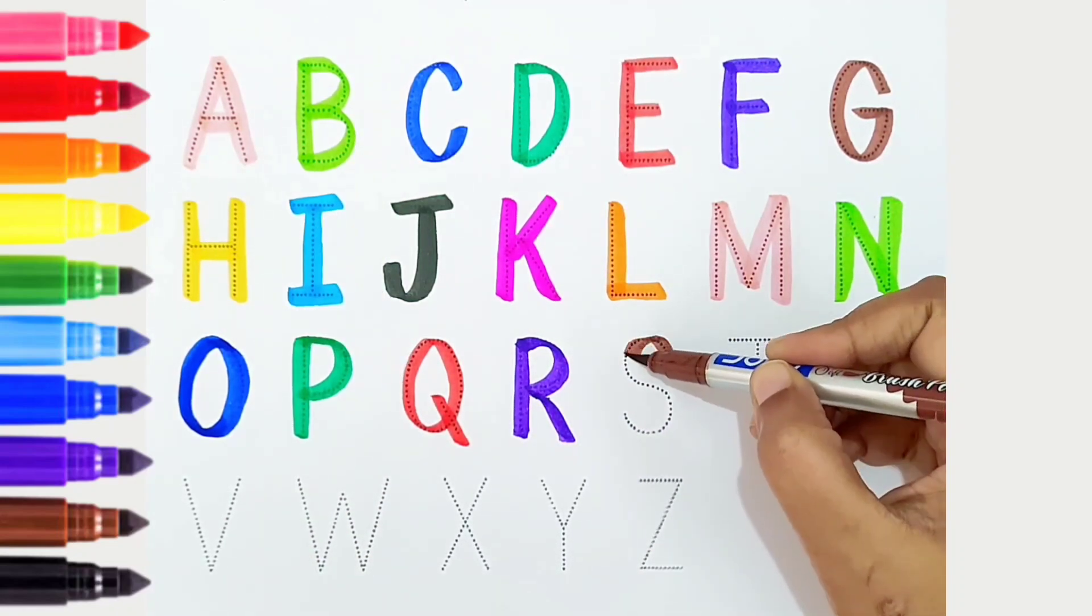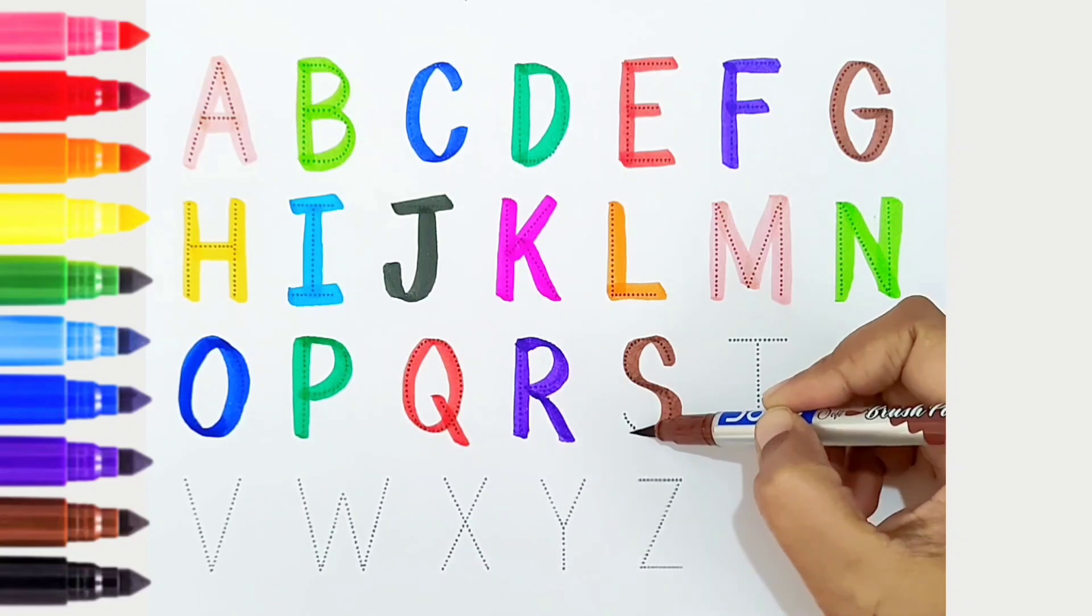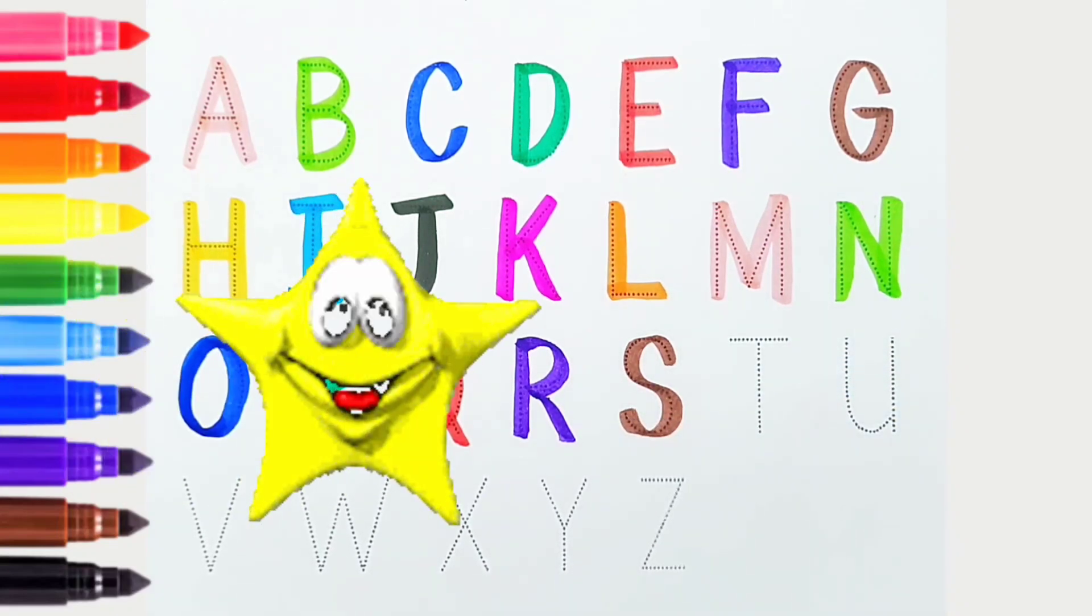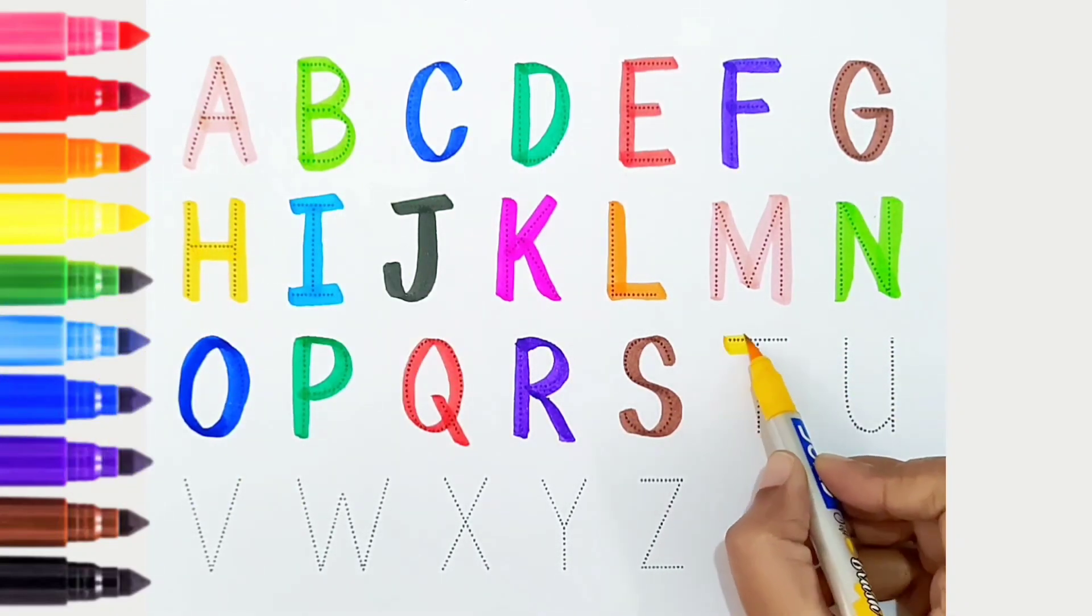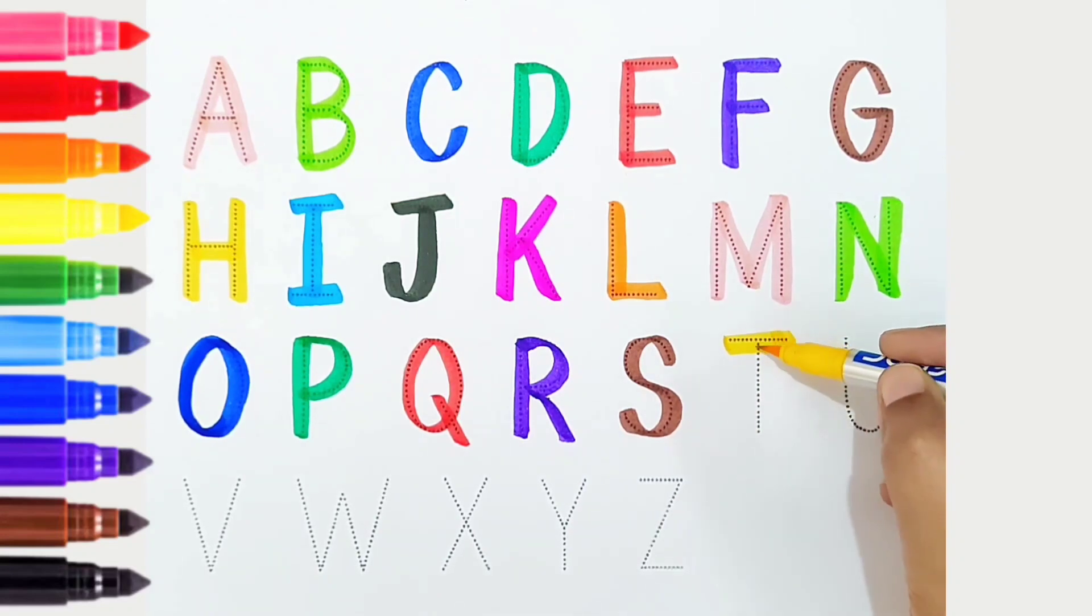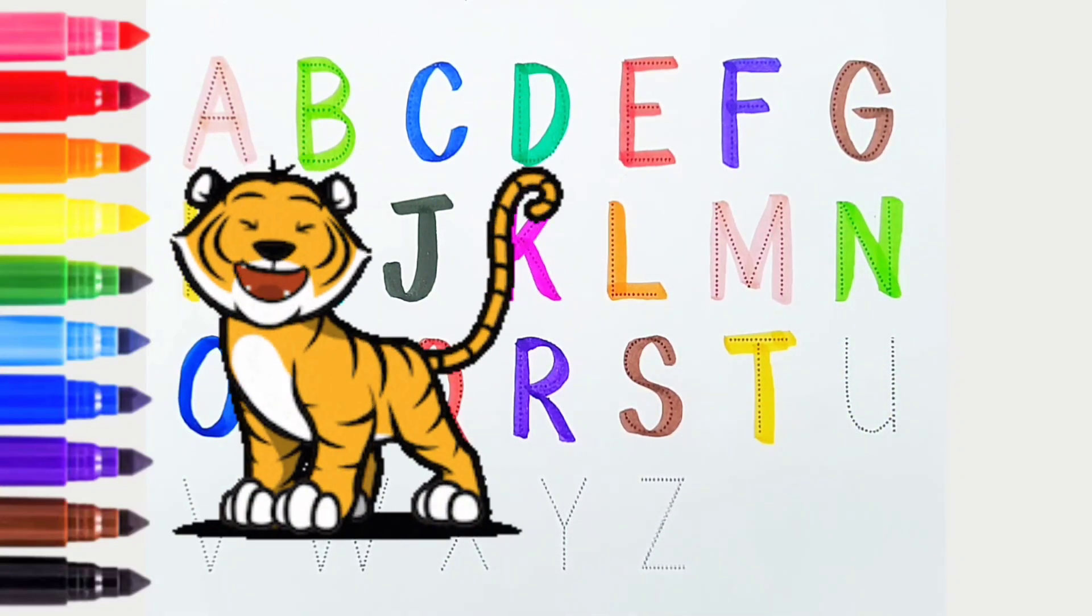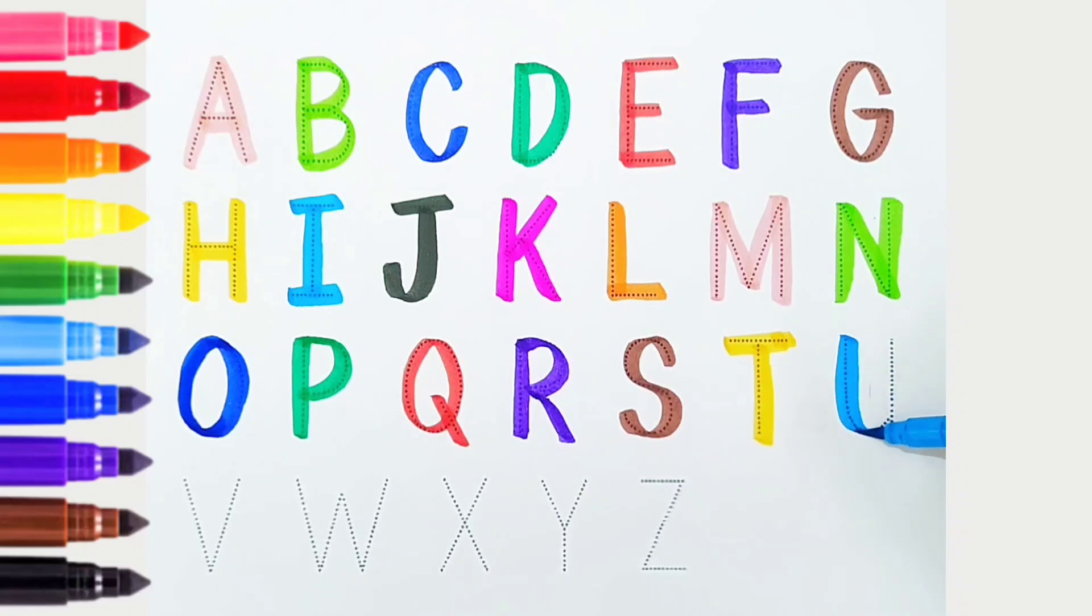S, brown color, is for star. T, yellow color, is for tiger. U, light blue color, is for umbrella.